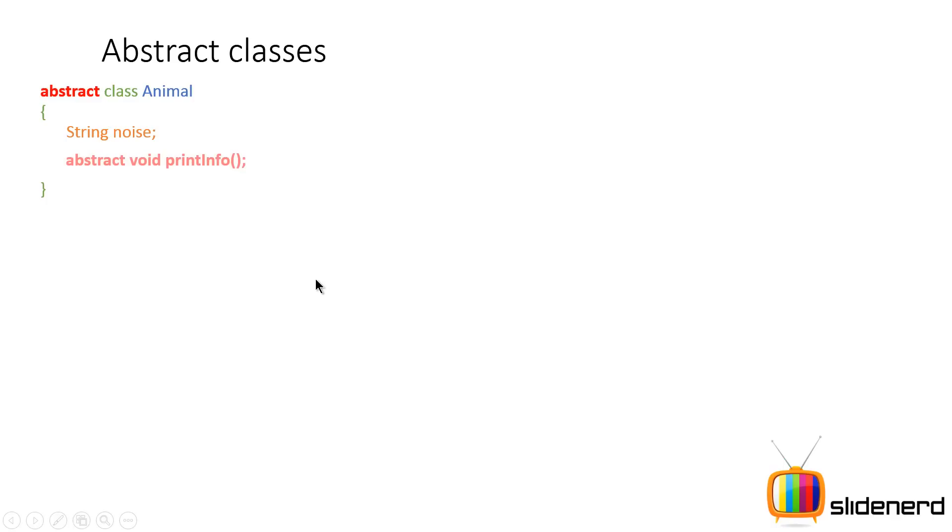So what is so different about this? Take a look at this method here, abstract void printInfo. Notice something after the method name, after the parentheses, I have a semicolon here. I have not put a method body. There is no opening parentheses,